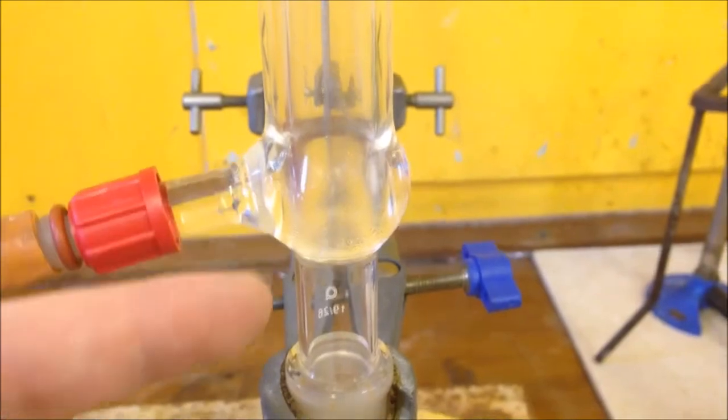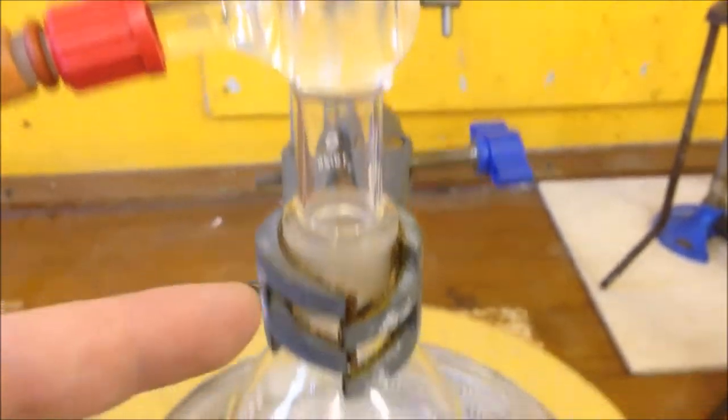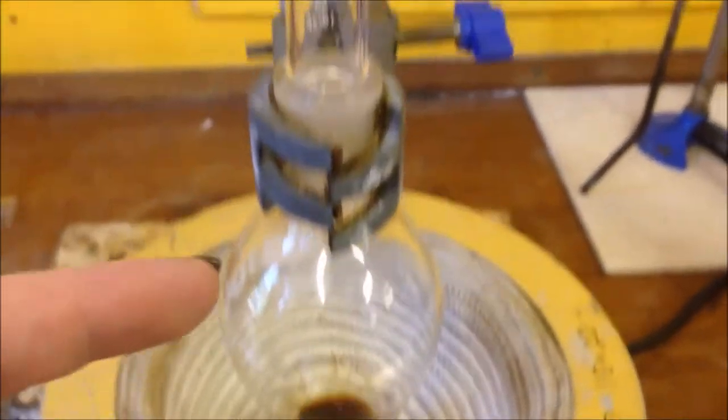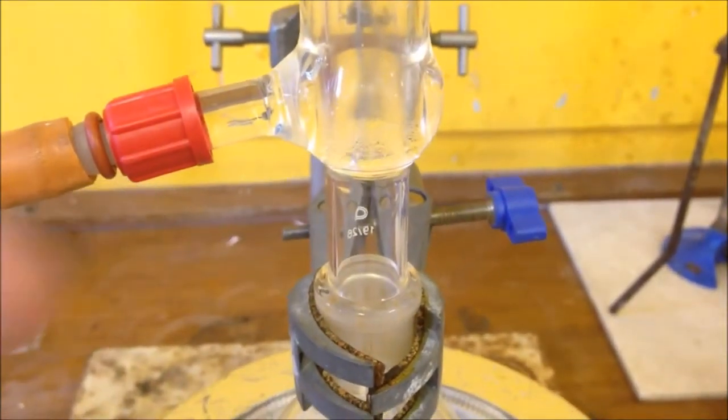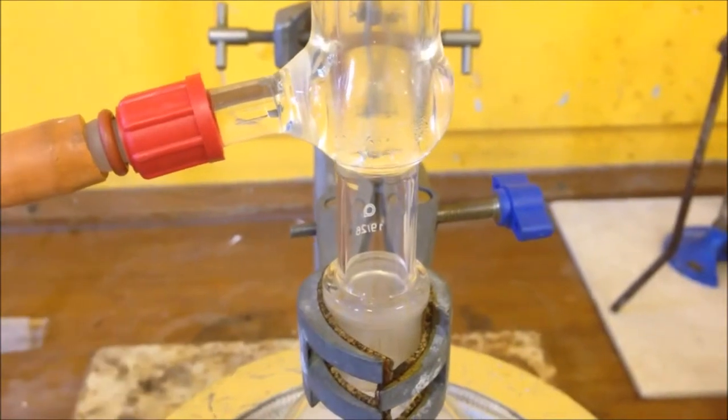You can see the condensation forming here and it's dripping back down again into the flask where it's being reboiled. So this is what's happening in reflux: things get boiled, condensed, boiled and condensed over and over again.